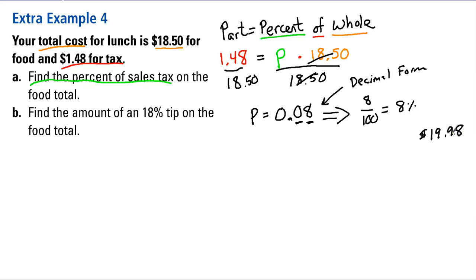So as of right now, you're paying $19.98 for this lunch. Part B, find the amount of an 18% tip on the food total.